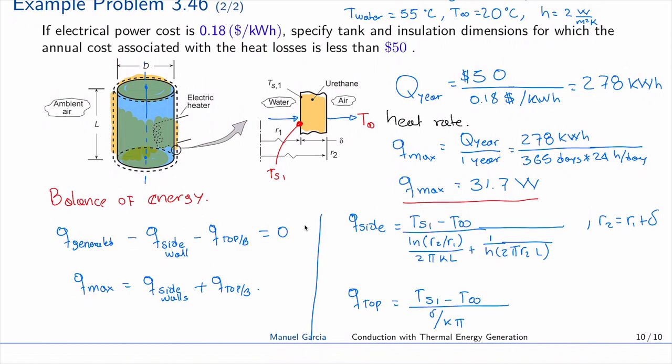So we have delta divided by k times πd² over 4. That's the resistance of the wall in that direction, and the resistance due to convection, which is 1 over h multiplied by the area, πd² over 4. Those are our balance of energy terms that we can combine into this equation.